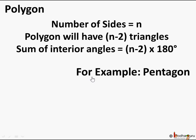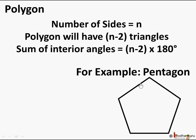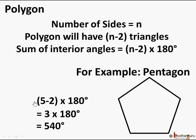Let's cross-check this. A pentagon has five sides, so n equals five. The sum of interior angles would be (5 − 2) × 180 degrees. Five minus two is three, and three times 180 degrees is 540 degrees. So for a pentagon, the sum of all five interior angles is equal to 540 degrees.